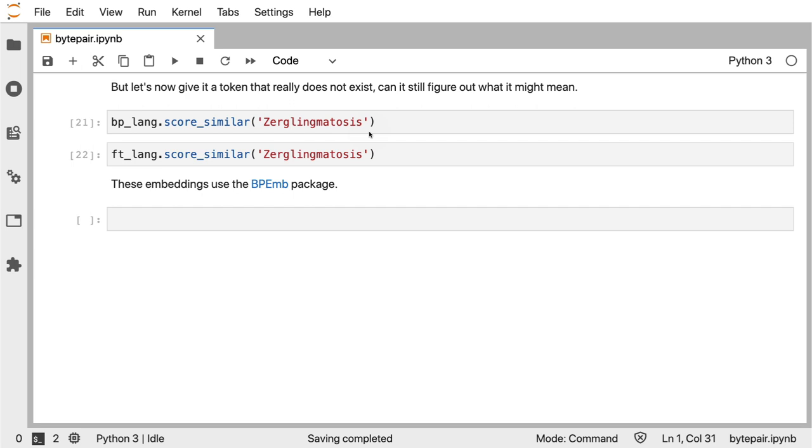However, because this is a very long word and because zerglingmatosis doesn't exist at all, we might have this opportunity that the byte pair language will focus in on the part that it does recognize, while the fast text language tries to make sense of everything else that's in the word.